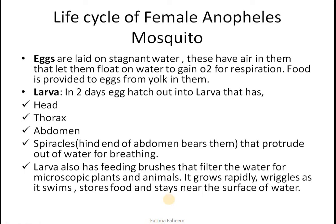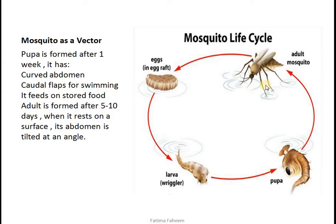This is the diagrammatic representation of the mosquito life cycle. Eggs are laid on stagnant water, hatched larvae wriggle around the surface, then grow into a pupa. The pupa has caudal flaps to help it swim and spiracles on the water surface to breathe. The pupa converts into an adult in about five to ten days. The adult mosquito sits on the water surface at an angle to the horizontal — this is a key identification feature.